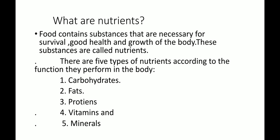These substances are called nutrients. There are 5 types of nutrients according to the functions they perform in the body: number 1 carbohydrates, number 2 fats, number 3 proteins, number 4 vitamins, and number 5 minerals.